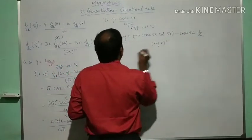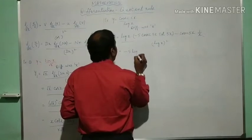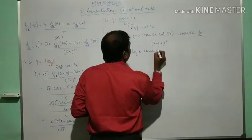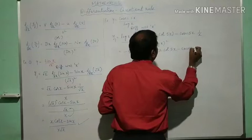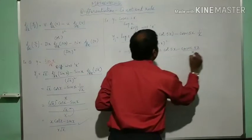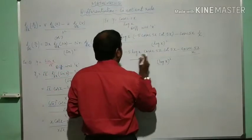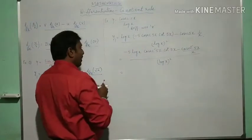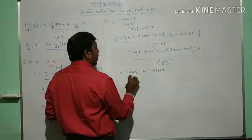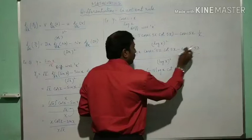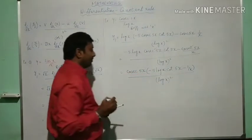Now you can rearrange this. I will take 5 here, minus 5 log x cosecant 5x. Or else you can take cosecant 5x common. Cosecant 5x cot 5x minus cosecant 5x divided by x, whole divided by log x whole square. Cosecant 5x is common. Now I will take this out: cosecant 5x, minus 5 log x is taken out, now cot 5x minus cosecant 5x is taken out, now 1 by x, over divided by log x whole square. This will be the answer.